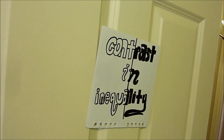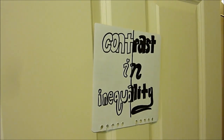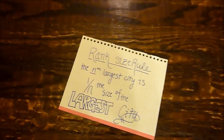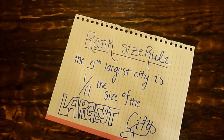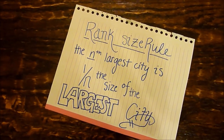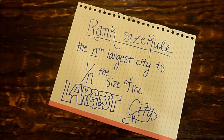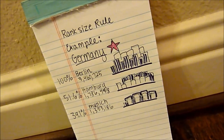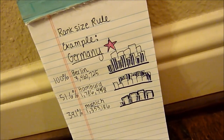Where the richest people live in the CBDs right next to the poorest people residing in the slums. However, despite these megacities, many developed countries can follow the settlement geography theory of rank size rule, where the nth largest city will be one and the size of the largest city. For example, with Germany, its largest city, Berlin, has a population of 3,460,725.